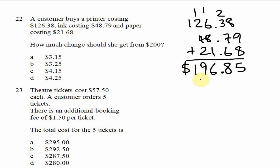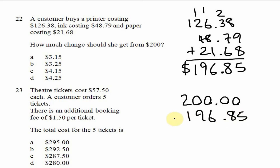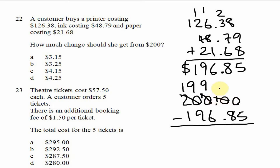The overall cost of the items is $196.85. Now we determine the change from $200 by subtracting: $200.00 − $196.85. We can't take 5 from 0, so we borrow — borrowing through the zeros gives us 10 in each position. 5 from 10 = 5, 8 from 9 = 1, 6 from 9 = 3, and 19 from 19 = 0. So our answer is $3.15, which is option A.